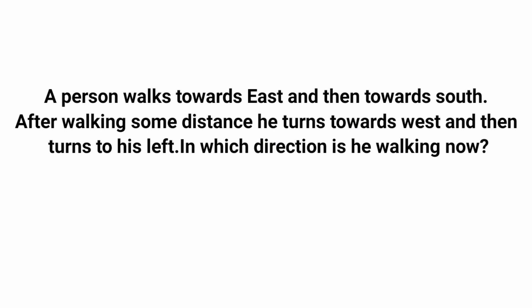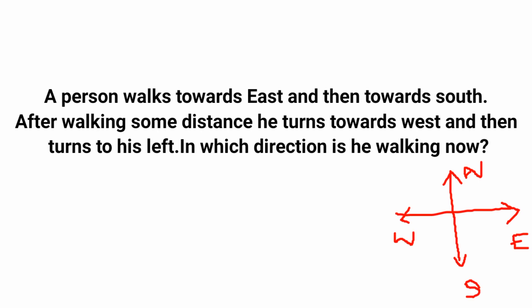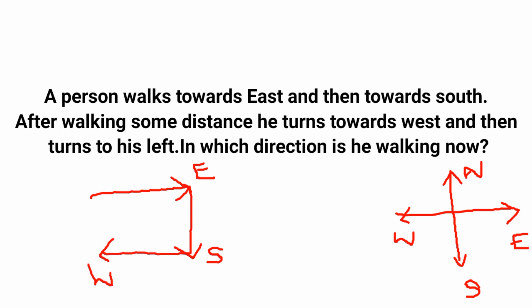First question: A person walks towards east, then towards south. After walking some distance he turns towards west, and then turns to his left. In which direction is he walking now? We know how to mark the four directions. He walks east, turns south, then turns west, then makes a left turn — left turn means moving in the anti-clockwise direction.